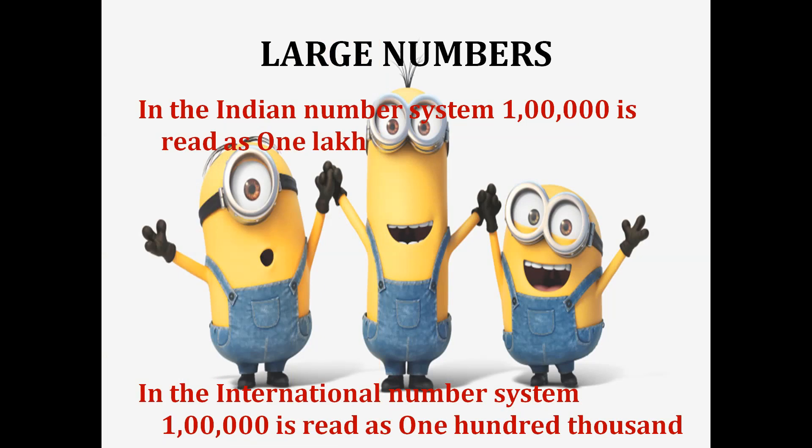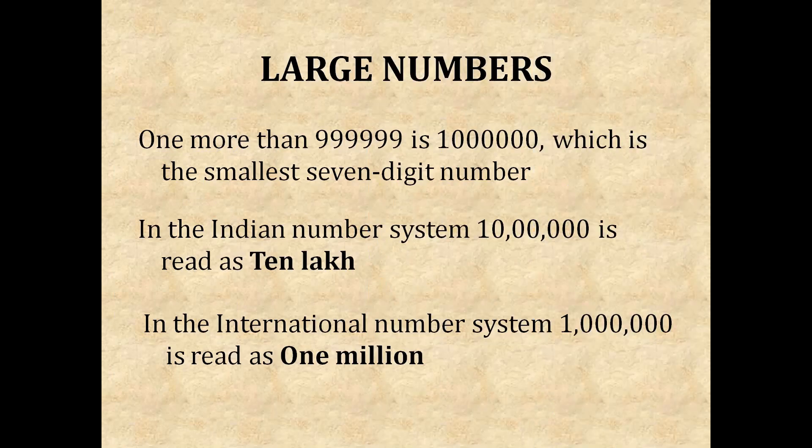Large numbers. In the Indian number system, this number is read as 1 lakh — this 6-digit number. In the international number system, the same number we can read as 100,000. One more than 9,99,999 we get 10 lakh, which is the smallest 7-digit number. In the Indian number system this number is 10 lakh; in the international number system, we read the same number as 1 million.